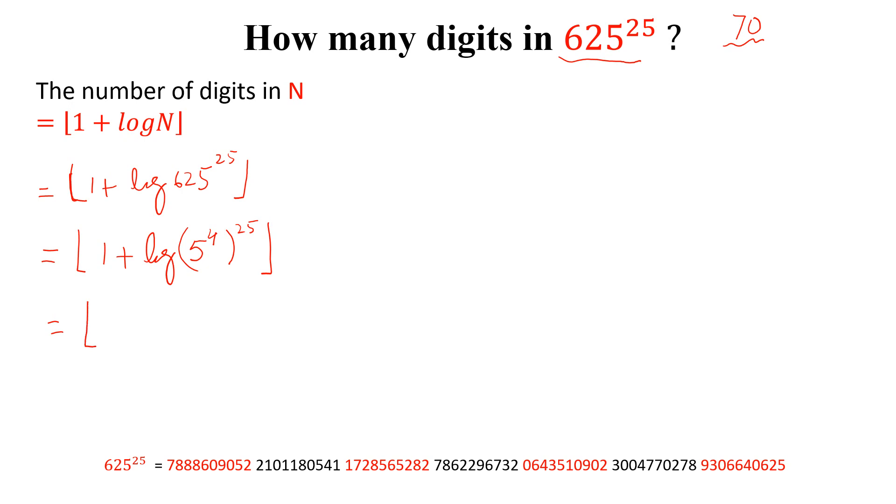Again, floor function of 1 plus log 5 to the power 100 and this is equal to 1 plus 100 log 5. Now, floor function of 1 plus log 5 is equal to 0.699 and so on. And this, we can write 1 plus 69.9 and so on.